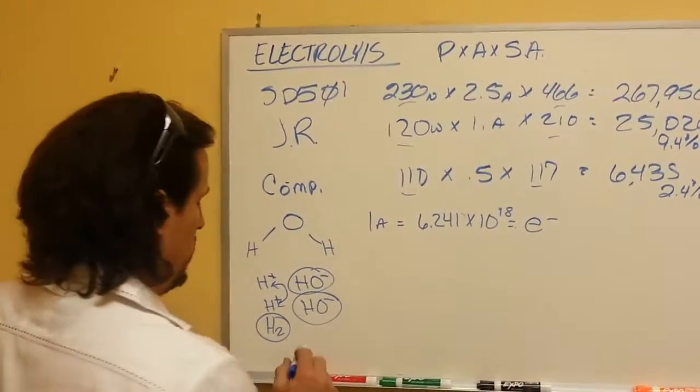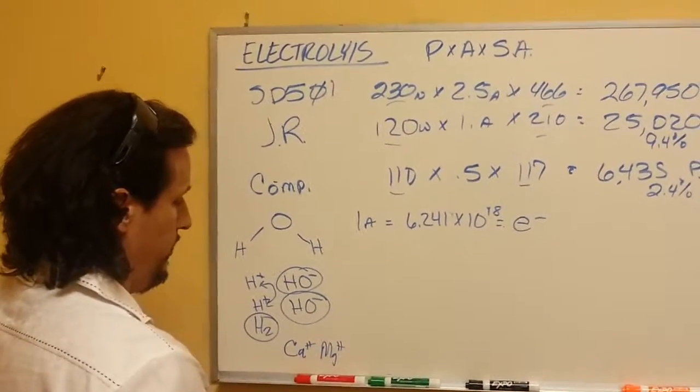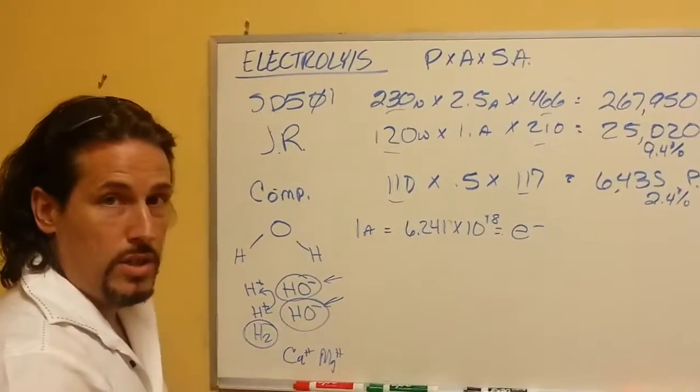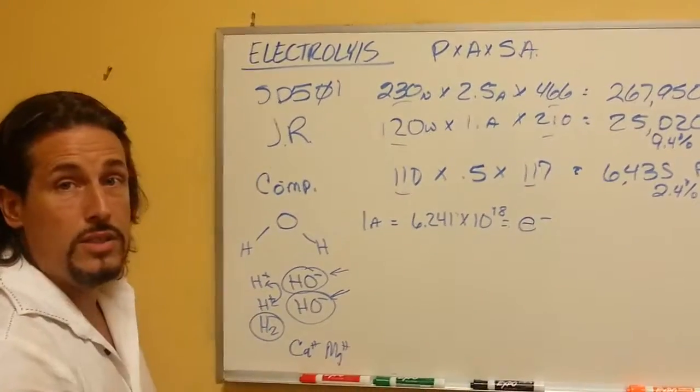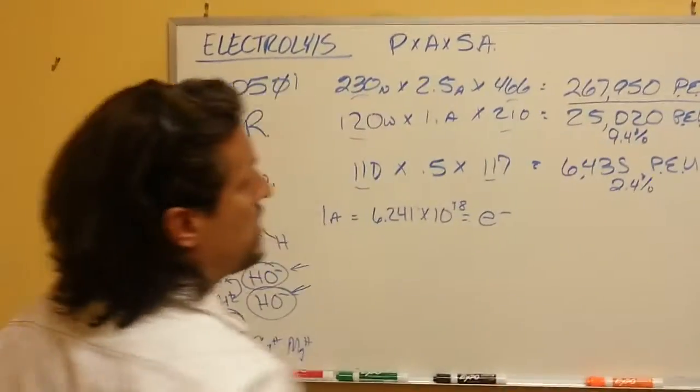When you make water alkaline, you're basically trying to add calcium and or magnesium. Alkalized water increases the ratio of hydroxyl and hydrogen. And so that's where you get the difference in this machine, and that requires an enormous level of power.